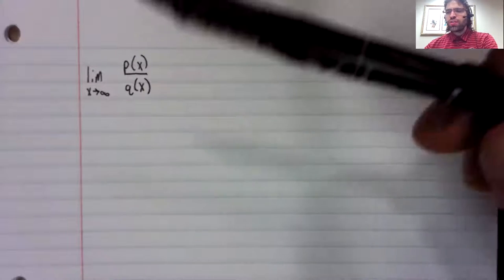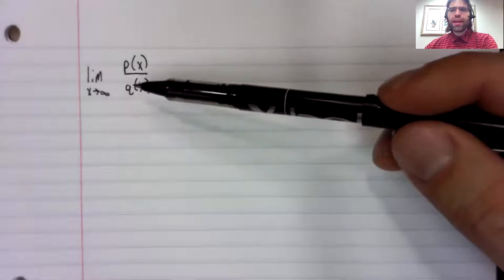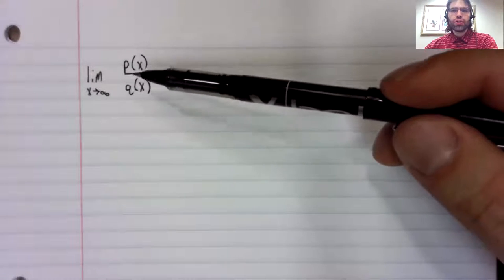Remember that a rational function is one polynomial divided by another. And this is a quotient, but we can't use a quotient rule.